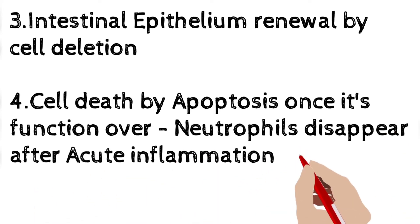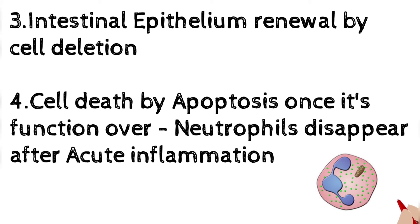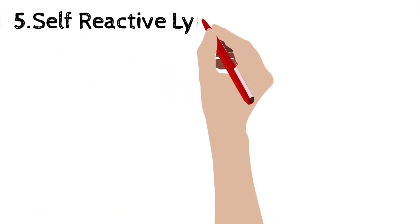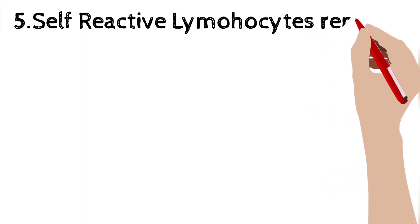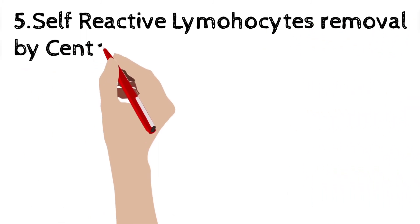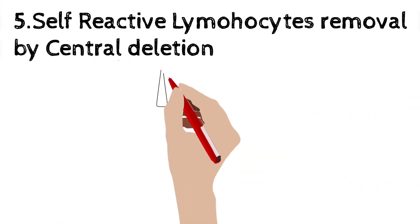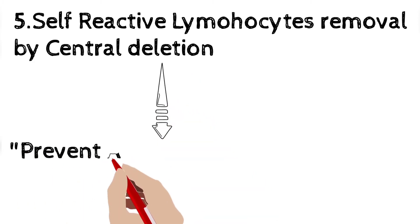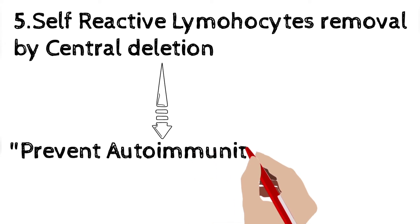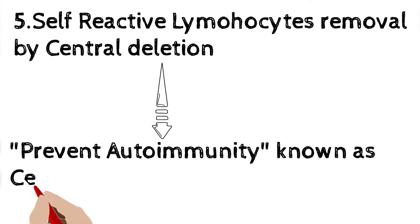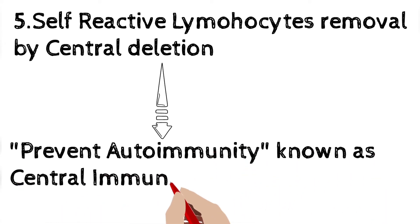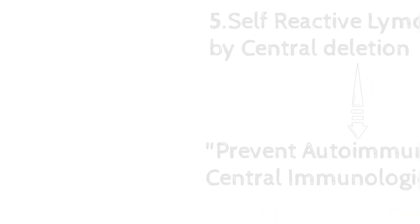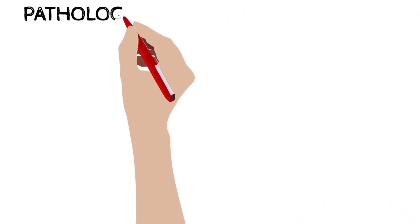The fourth example is apoptosis of a cell once its function is over — for example, the neutrophil that appears in acute inflammation will disappear by apoptosis once its function is over. The fifth important example is self-reactive lymphocytes, which are removed by central deletion in the bone marrow, helping in prevention of autoimmunity. This is also known as central immunological tolerance.